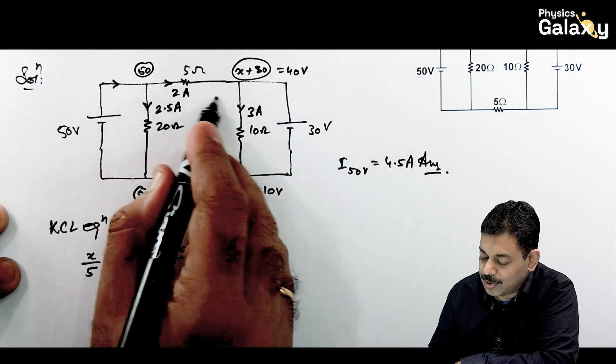If x is 10 volt, this value will be 40 volt. To calculate current through the batteries, see how much current flows. Here the current is 50 divided by 20, which is 2.5 ampere. Here it's 50 minus 40, that is 10 divided by 5, which is 2 ampere. So this battery's current is 2 plus 2.5, so current through 50 volt battery is 4.5 ampere. For the 30 volt battery, here current flows 40 minus 10, 30 divided by 10, this is 3 ampere, and from here 2 ampere.